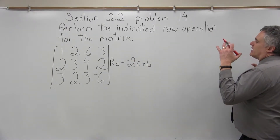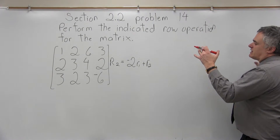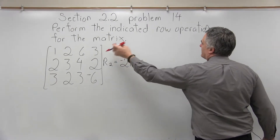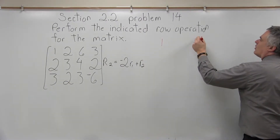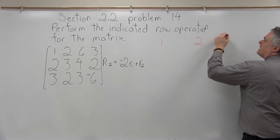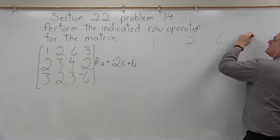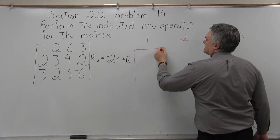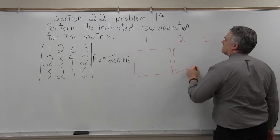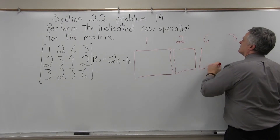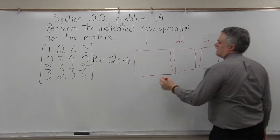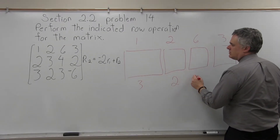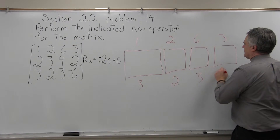So making a new row 2, what I'm going to do is draw a super big matrix off to the side and then clean it up underneath. Row 1 can go into the new matrix unchanged: 1, 2, 6, 3, leaving some space. And the bottom row will be 3, 2, 3, negative 6.